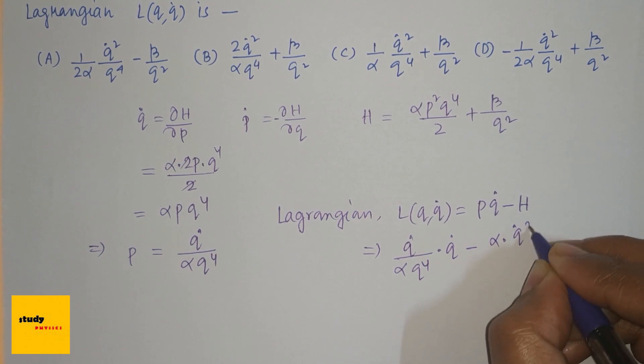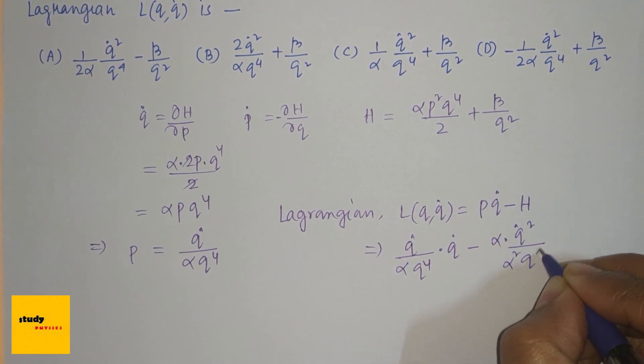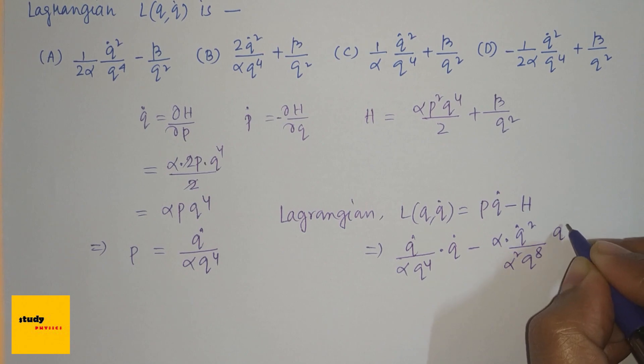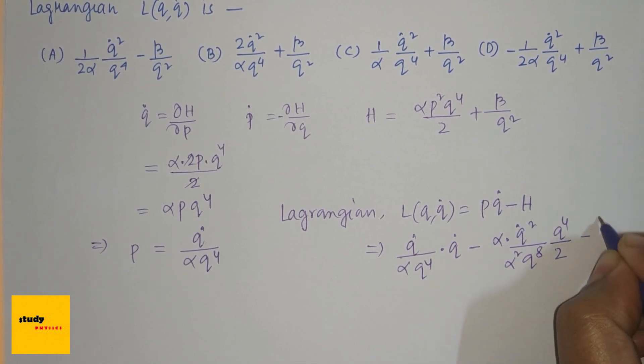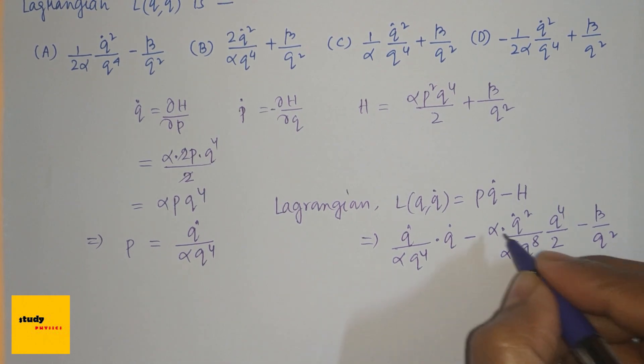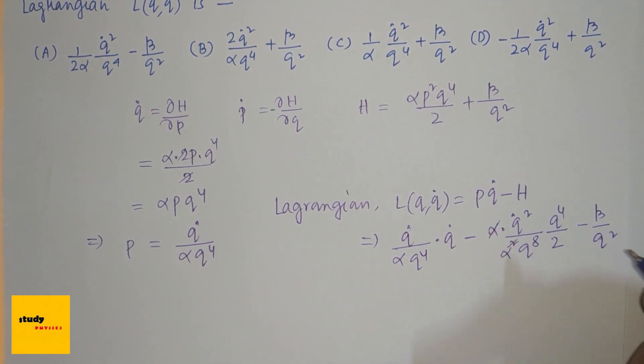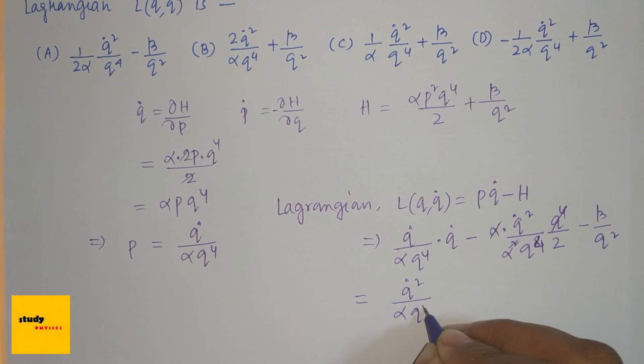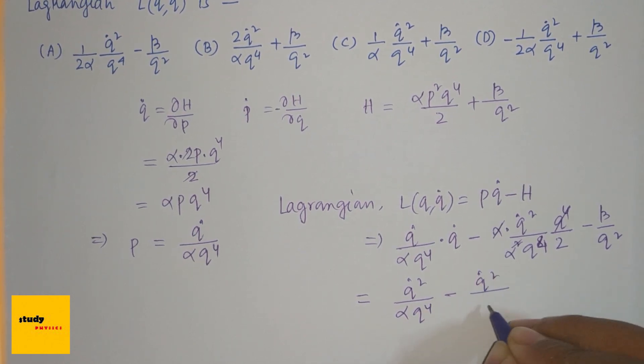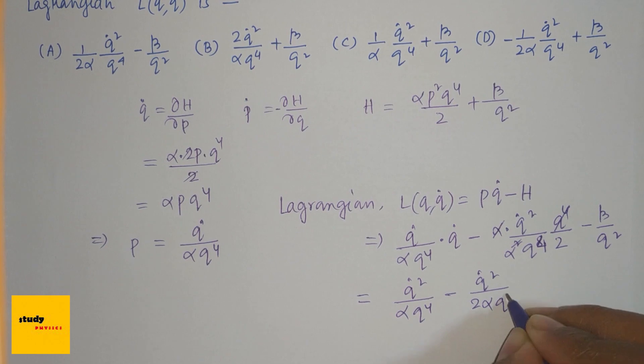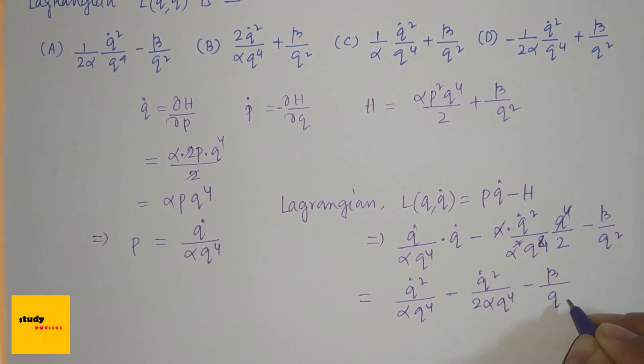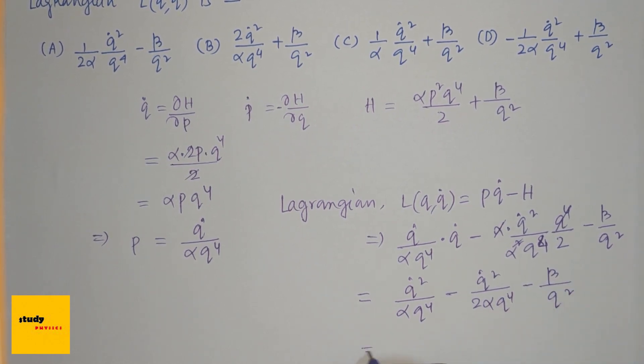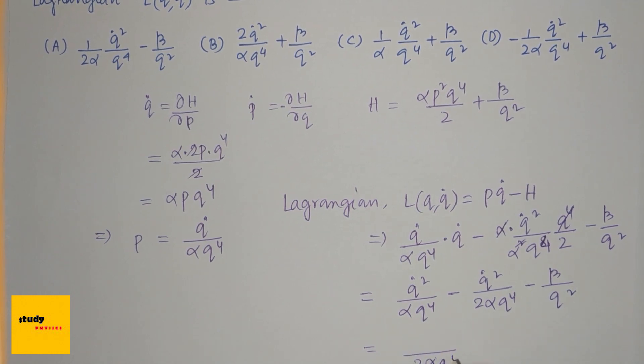Substituting p = q̇/(αq⁴) into H = αp²q⁴/2 + β/q², we get L = q̇²/(αq⁴) - [αq⁴·(q̇/(αq⁴))²/2 + β/q²]. This simplifies to L = q̇²/(αq⁴) - q̇²/(2αq⁴) - β/q², which equals q̇²/(2αq⁴) - β/q².